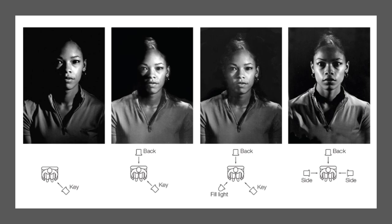If you ever go to a museum that features only sculpture, a lot of times you'll see windows or lights placed on the sides. The sculpture museum in Dallas does this. What that does is give a really strong sense of modeling or three-dimensionality, because it uses light from the sides to emphasize the forms, creating really strong shadows and lots of drama.